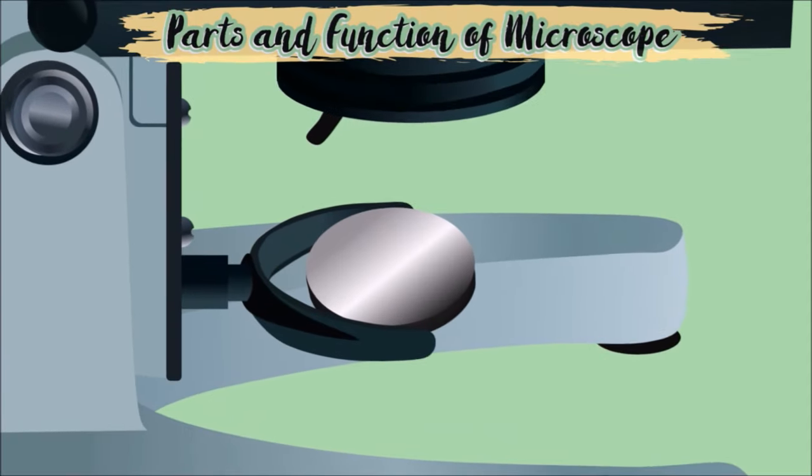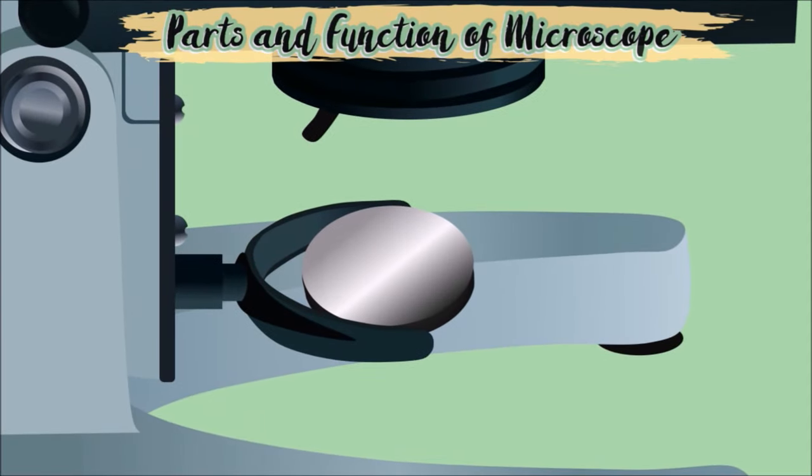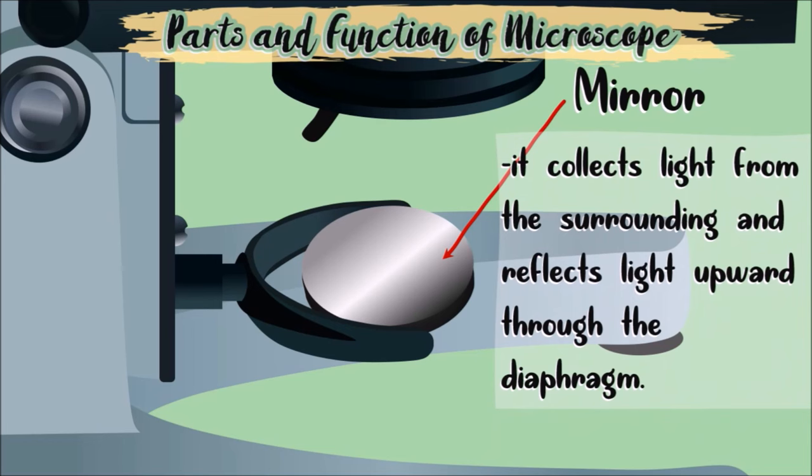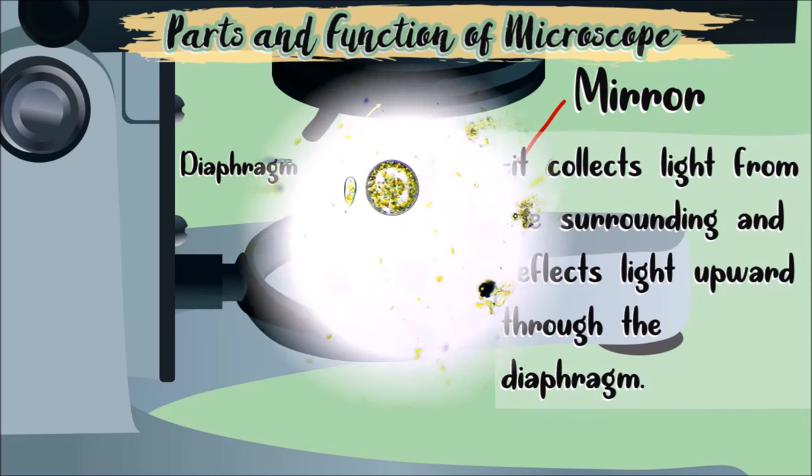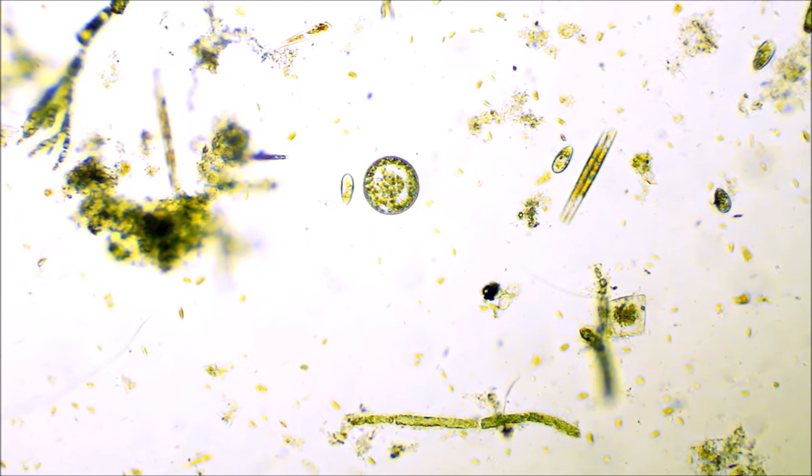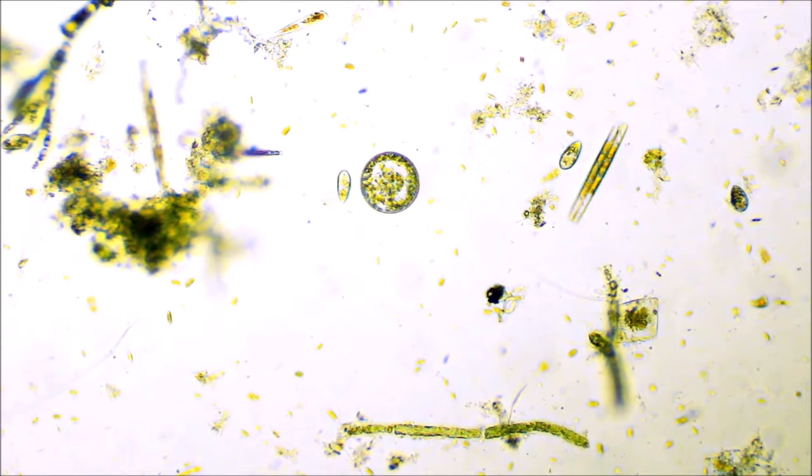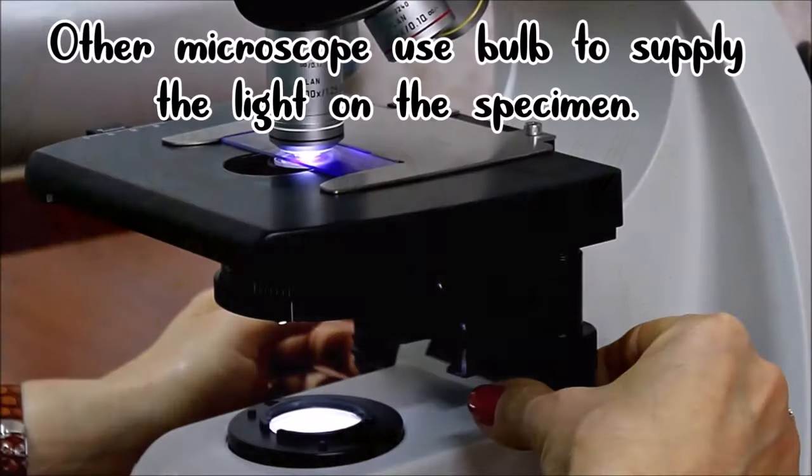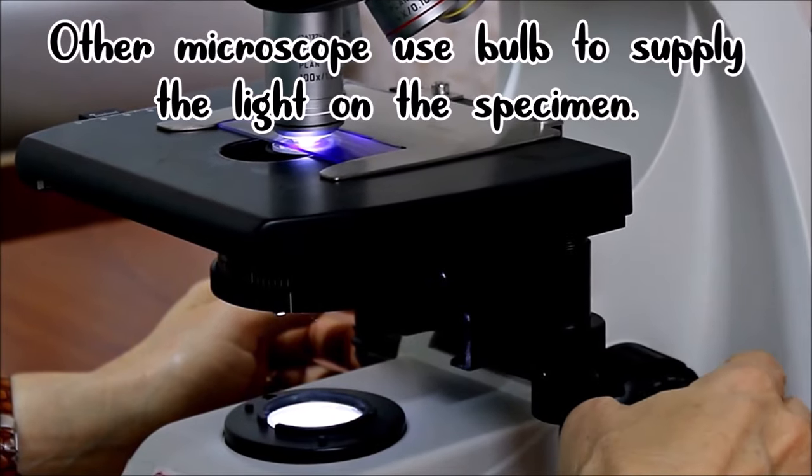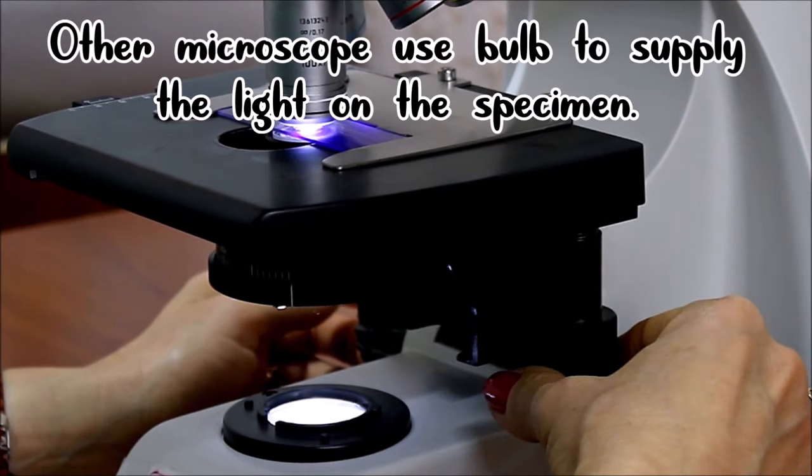Take a look at this. Why do we have a mirror right here? This mirror is important because it collects light from the surrounding and reflects light upward through the diaphragm. We need to put light on the specimen so we can see it clearly. That is why other microscopes use bulbs to supply the light on the specimen.